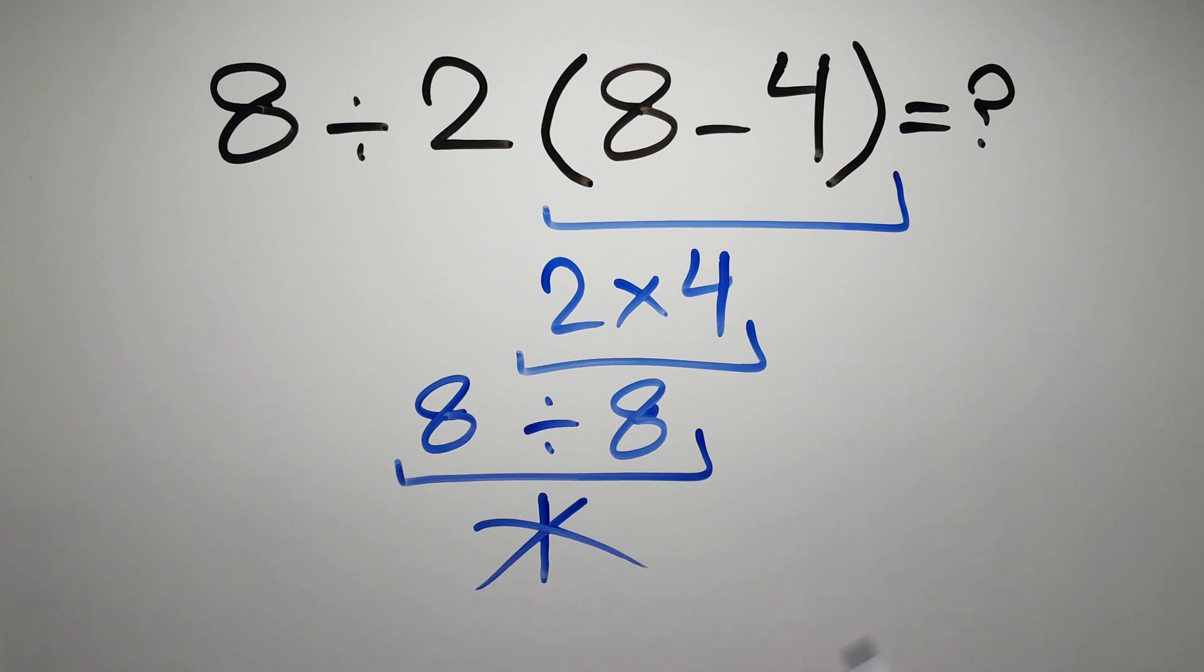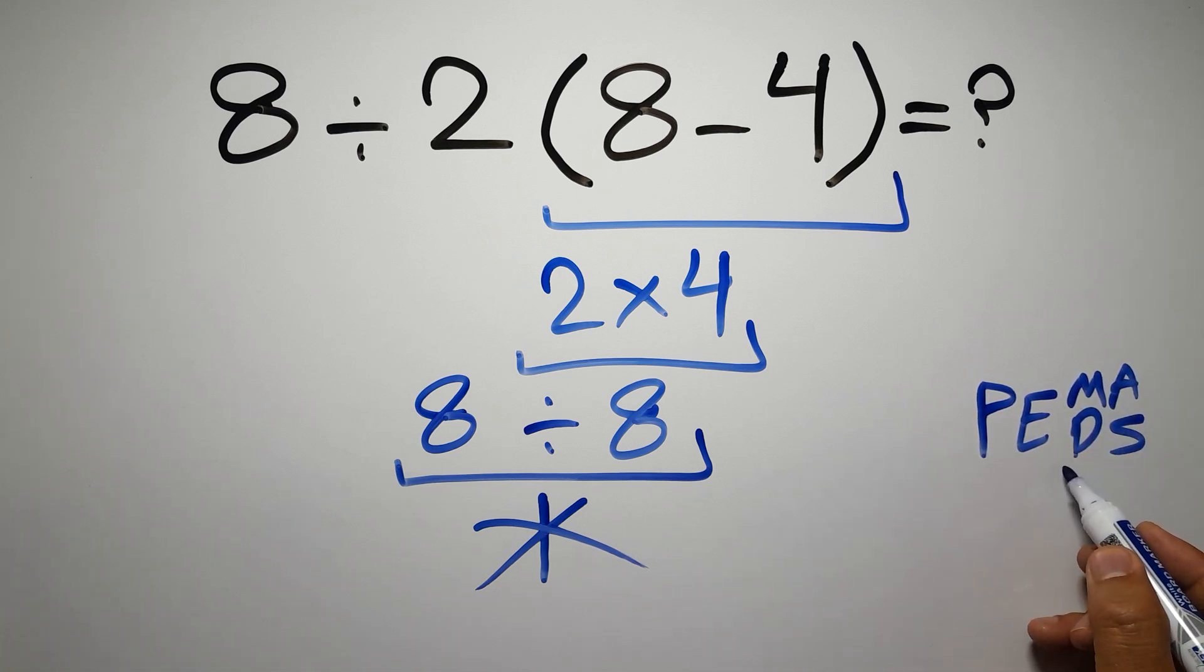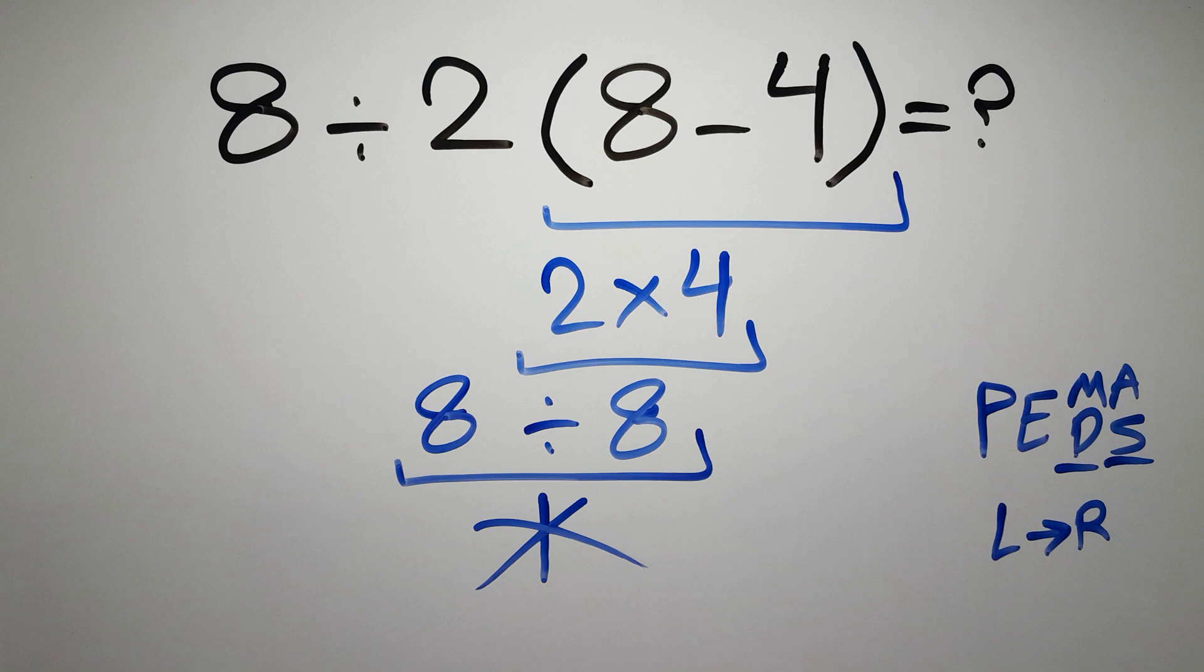because according to the order of operations, first we have to do parentheses, then exponents, then multiplication or division, and finally addition or subtraction. Remember that multiplication and division have equal priority, and we have to work from left to right, and the same applies to addition and subtraction.